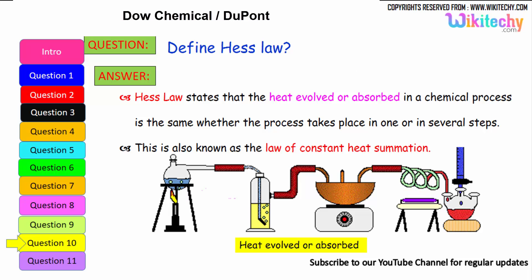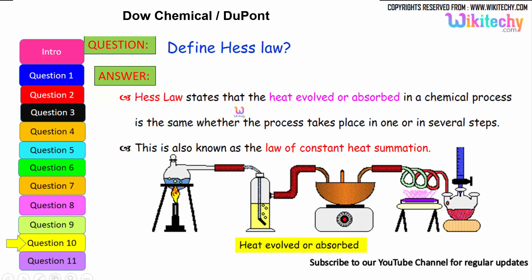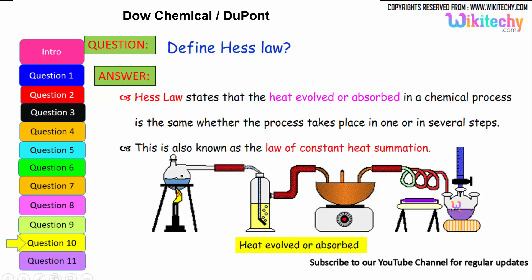Define Hess's Law. This is a very important question. In the case of generating heat between an object and its surroundings, this law states that the heat evolved or absorbed in a chemical process is the same whether the process takes place in one step or in several steps. This is also known as the law of constant heat summation.